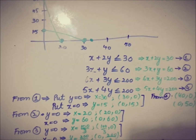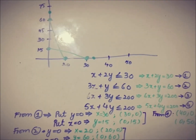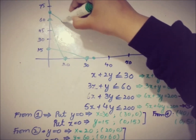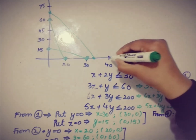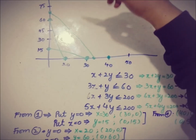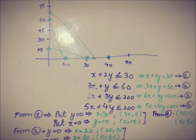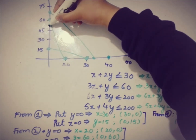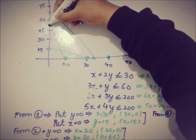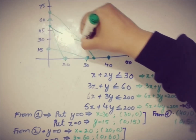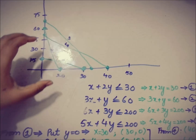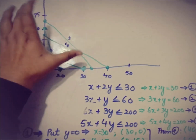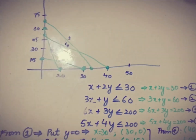The third constraint line is plotted approximately between 75 and 60 on the y-axis, so we join that. The fourth pair is (40, 50), approximately between 45 and 60, and I draw that line. So this line is from the first constraint, this from the second, this from the third, and this from the fourth.